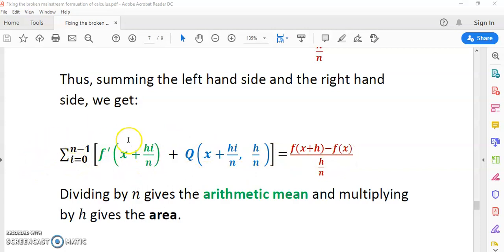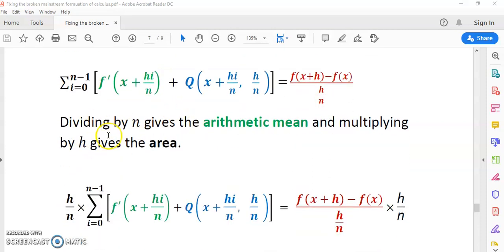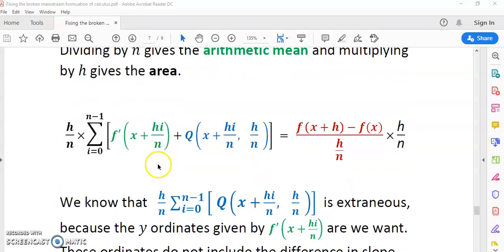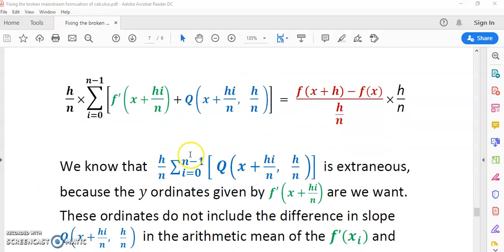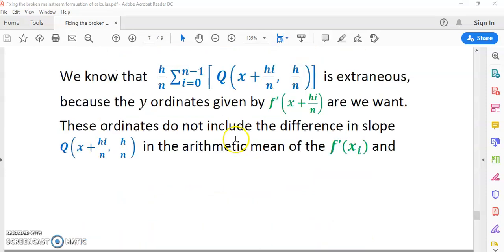You'll notice at the right-hand side, it telescopes, and what you get is this red expression here. If you sum the left and the right, you end up with what you see in front of you in the middle here, where my mouse is hovering. Now we need to divide by n to get the arithmetic mean. That's the first thing we do. Then we multiply by h to get the area. So doing so, we take this, divide by n to get the arithmetic mean, and multiply by h to get the area. Thus we end up with the integral that you see down here.